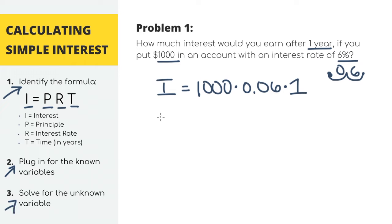Multiplying it all together, we'll get 60. This means that if we put $1,000 into an account at this bank and wait for one year, we'll get an interest of $60, which is our final answer.